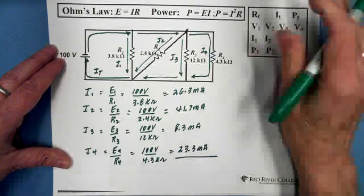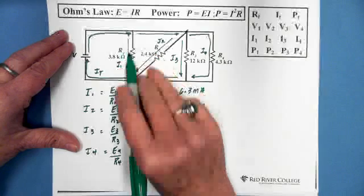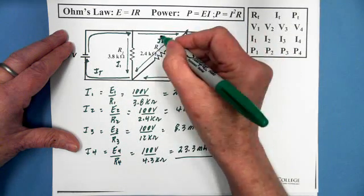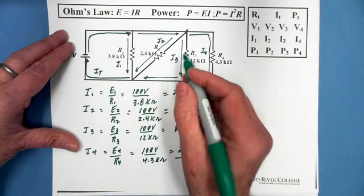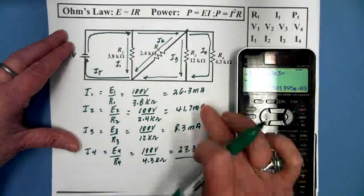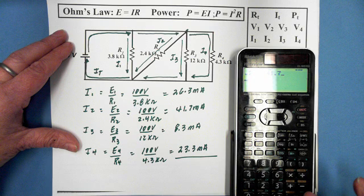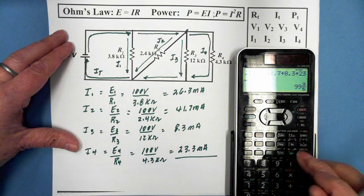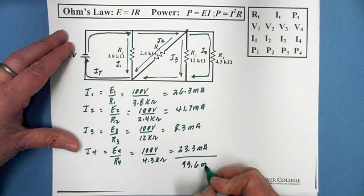Now, we've already talked about this before in the previous video, but what happens is this total current just keeps splitting as it's walking through this circuit. So some of it goes this way, some goes that way, the current that goes into here splits into this one and this one. So it just keeps breaking up, but all of these currents have got to add up to the total current. So let's add these up, and I'm not going to put in the milli, I'm just going to add up the numbers. So 26.3 plus 41.7 plus 8.3 plus 23.3 equals, wow, that's a great number, 99.6 milliamps.